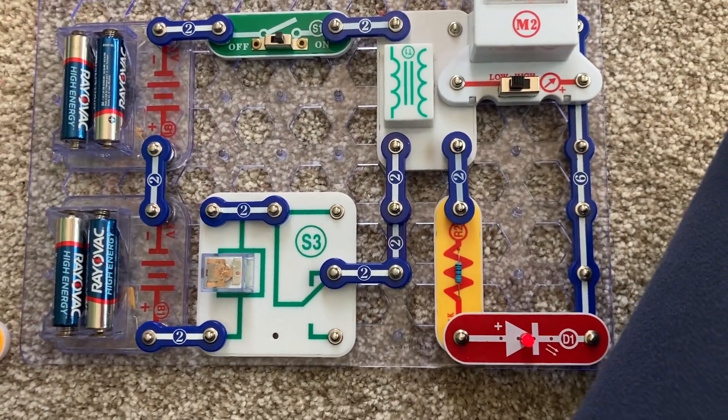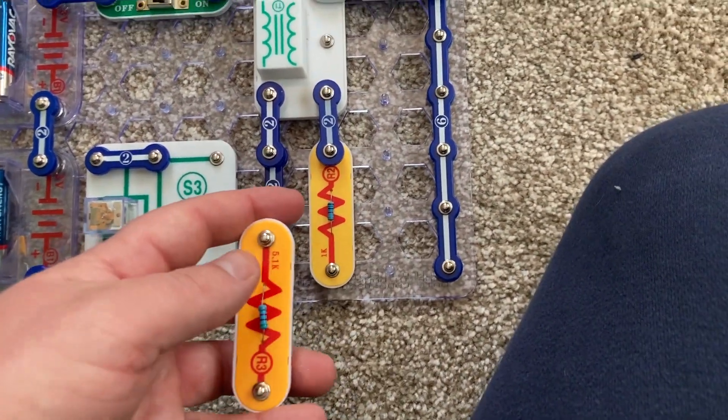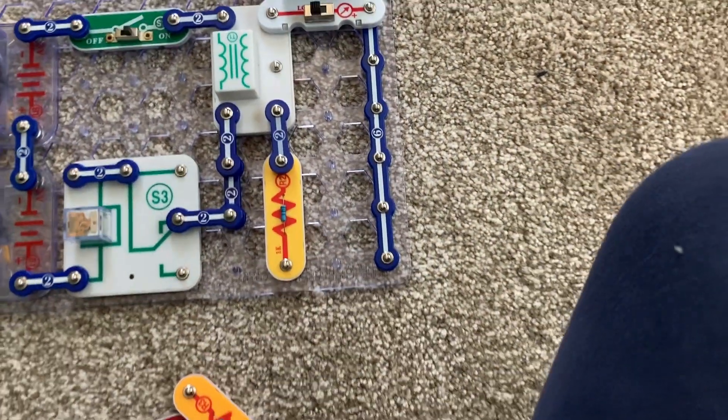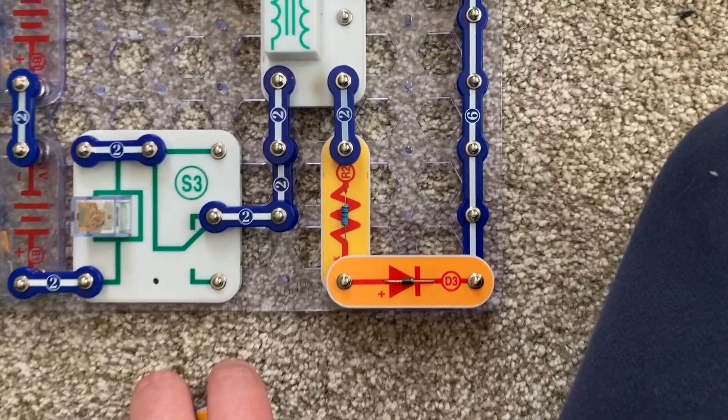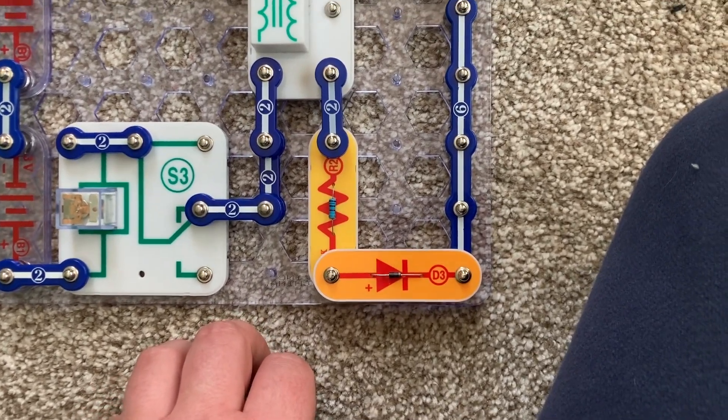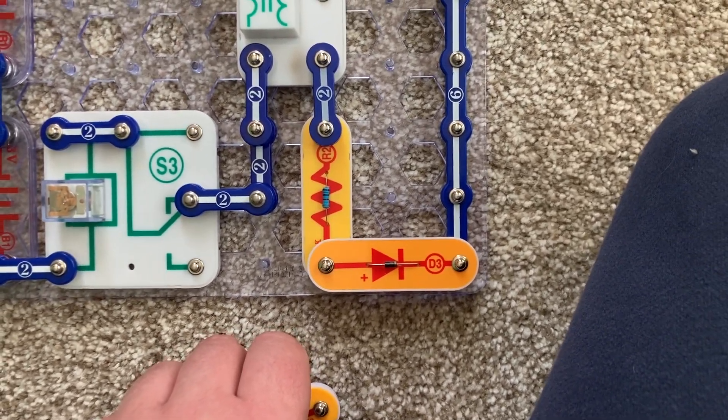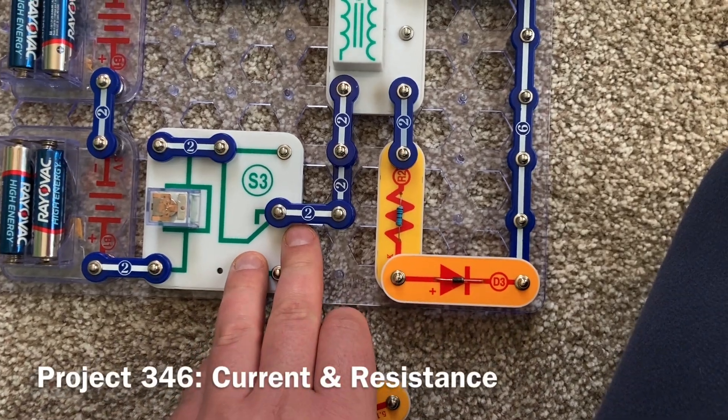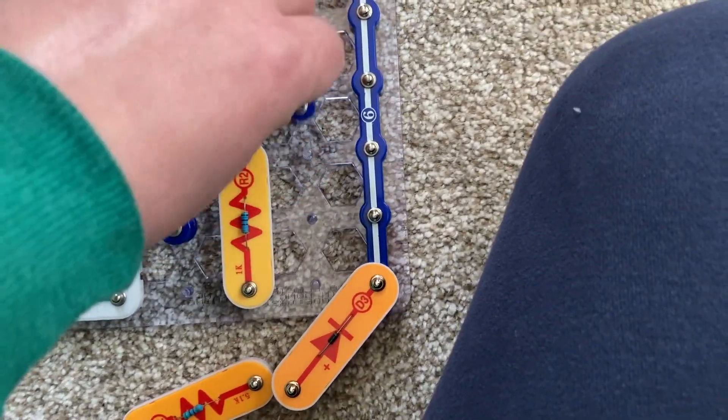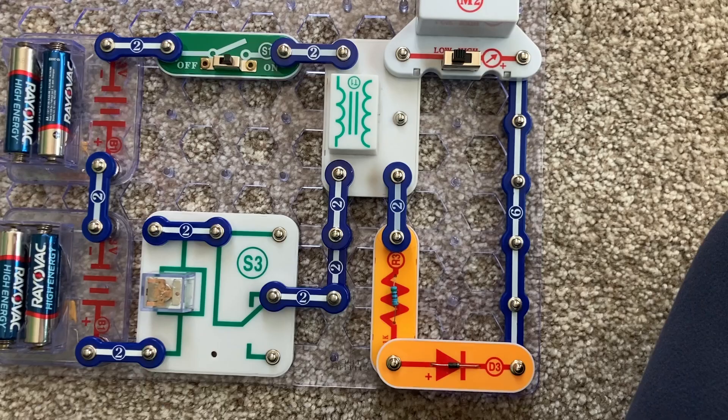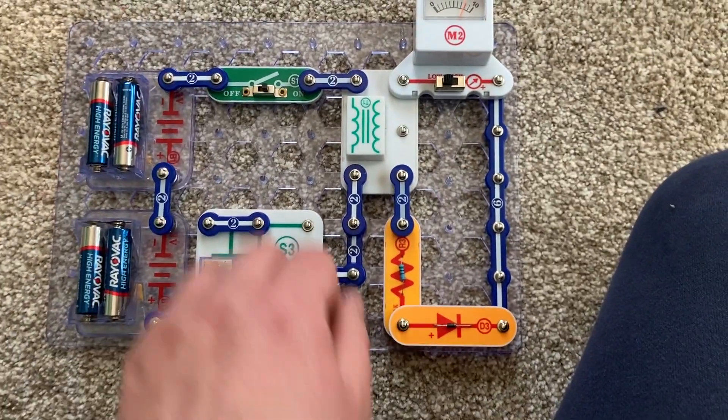Finally, for the next project, I'm going to remove the LED and replace it with the basic diode. Now, look how far the meter deflects, past 10 milliamps, because the basic diode has a lower voltage drop than that of the red LED. Finally, I am going to change the R2 resistor, and replace it with the R3 one. Look how much the current has decreased. When resistance is increased, current obviously decreases. And there you have it.